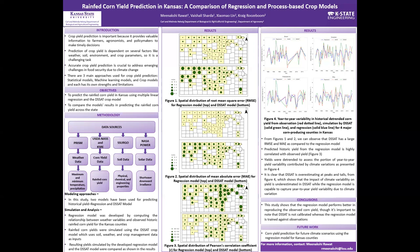There are three main approaches used for crop yield prediction worldwide: statistical model, machine learning model, and crop models. Each has its own strengths and limitations.